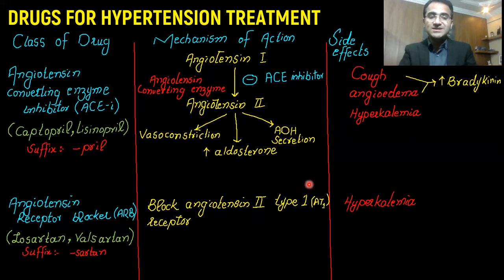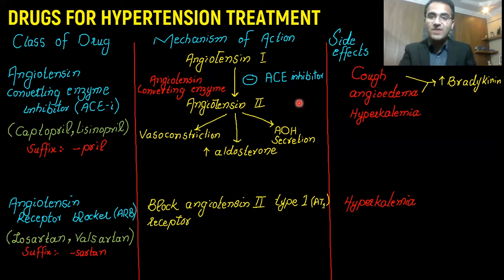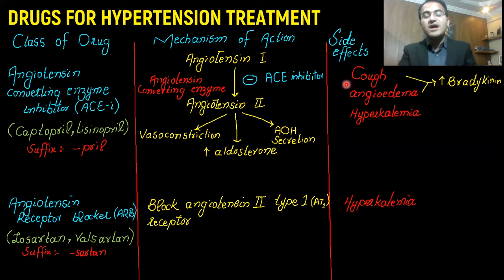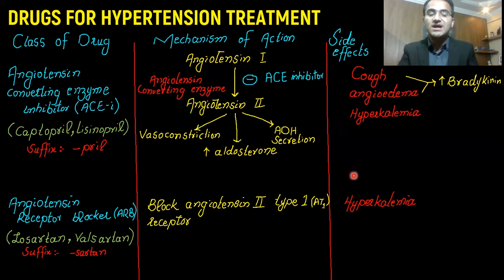An important clinical note: patients are often started on ACE inhibitors to control hypertension, but then begin developing cough. If a patient comes back with a complaint of cough, you should switch them from ACE inhibitors to angiotensin receptor blockers, because ARBs do not cause cough.